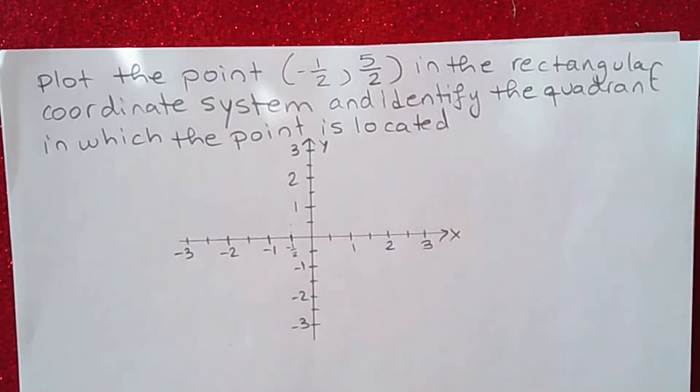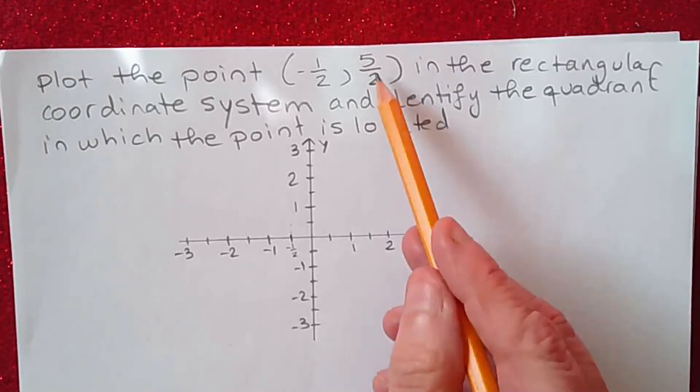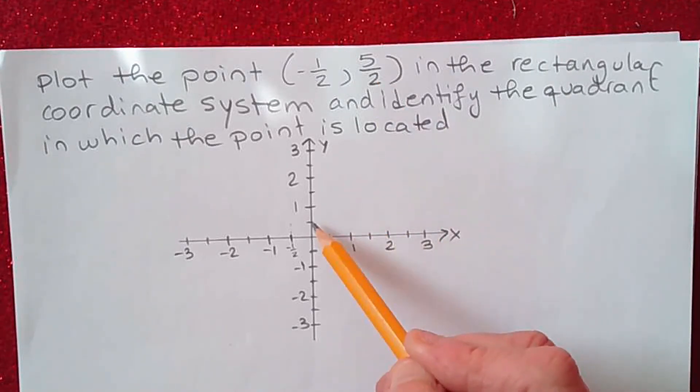But y is five over two, and five over two is equal to two point five. So you have y is five over two; it's two point five.